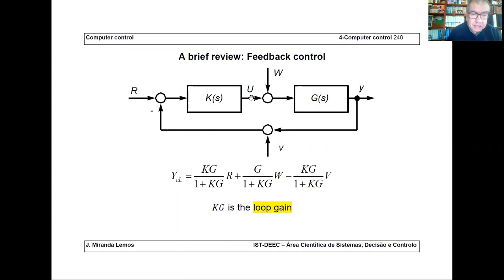I use this tracking error to excite my controller block K of s to generate a manipulated input. This is a general feedback control architecture. It could be made a little bit more general if you would filter r — we will discuss this more later — but for the moment let's assume that we have a simple feedback loop control.